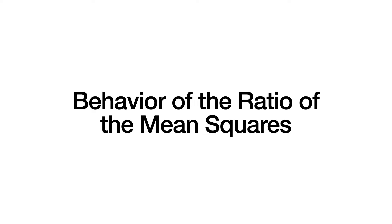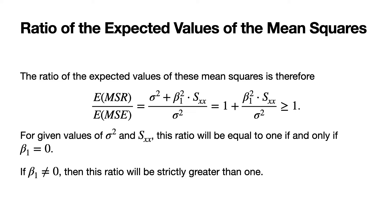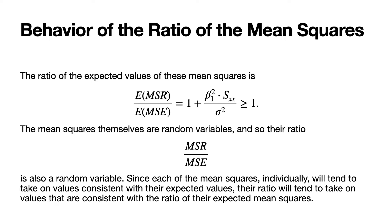Let's look at the behavior of the ratio of the mean squares. We'll first look at the ratio of the expected values of the mean squares. That ratio equals one plus beta1 squared times S sub xx over sigma squared, and that is greater than or equal to one. For given values of sigma squared and S sub xx, this ratio will equal one if and only if beta1 equals zero. If beta1 is not equal to zero, then this ratio will be strictly greater than one.